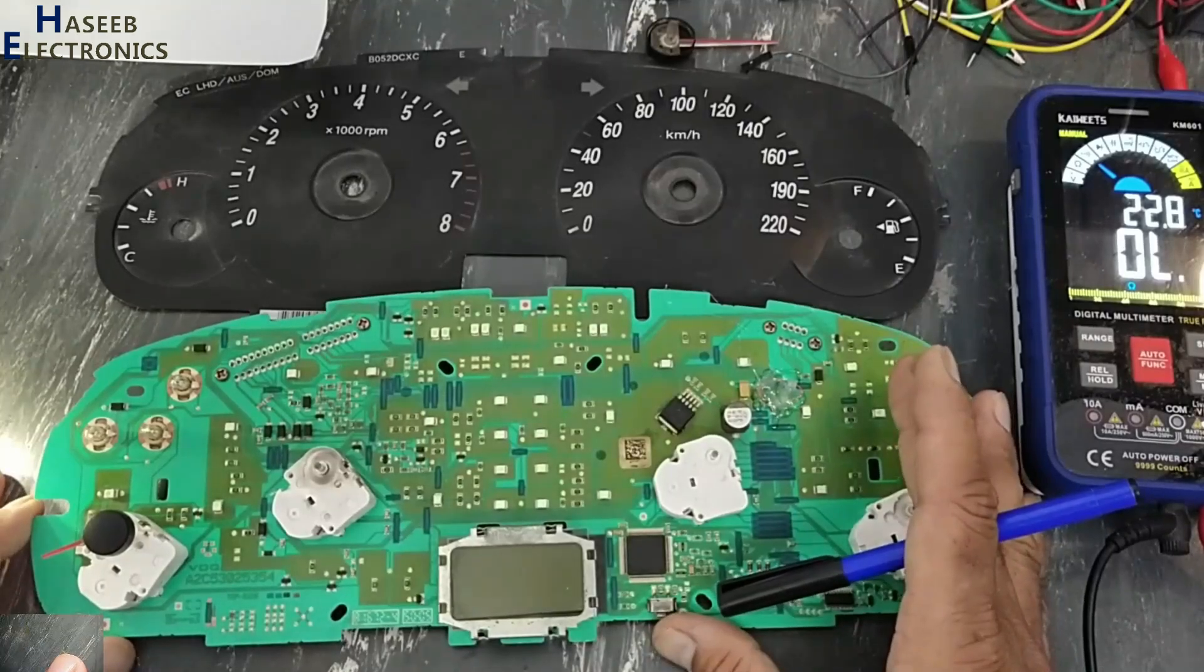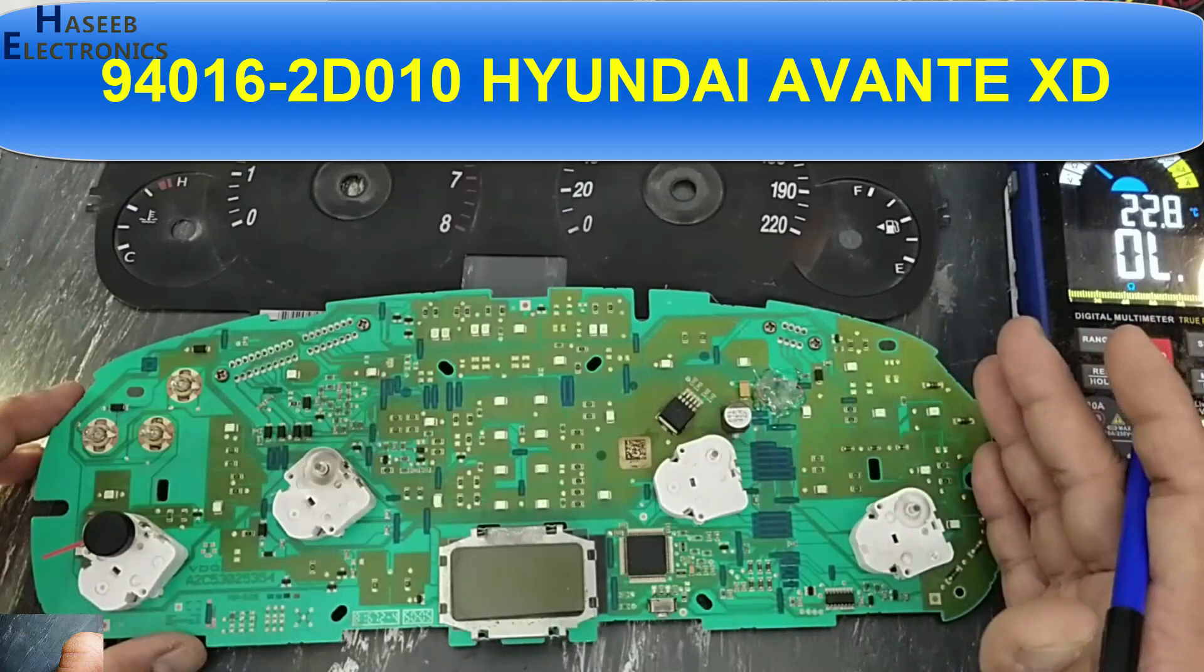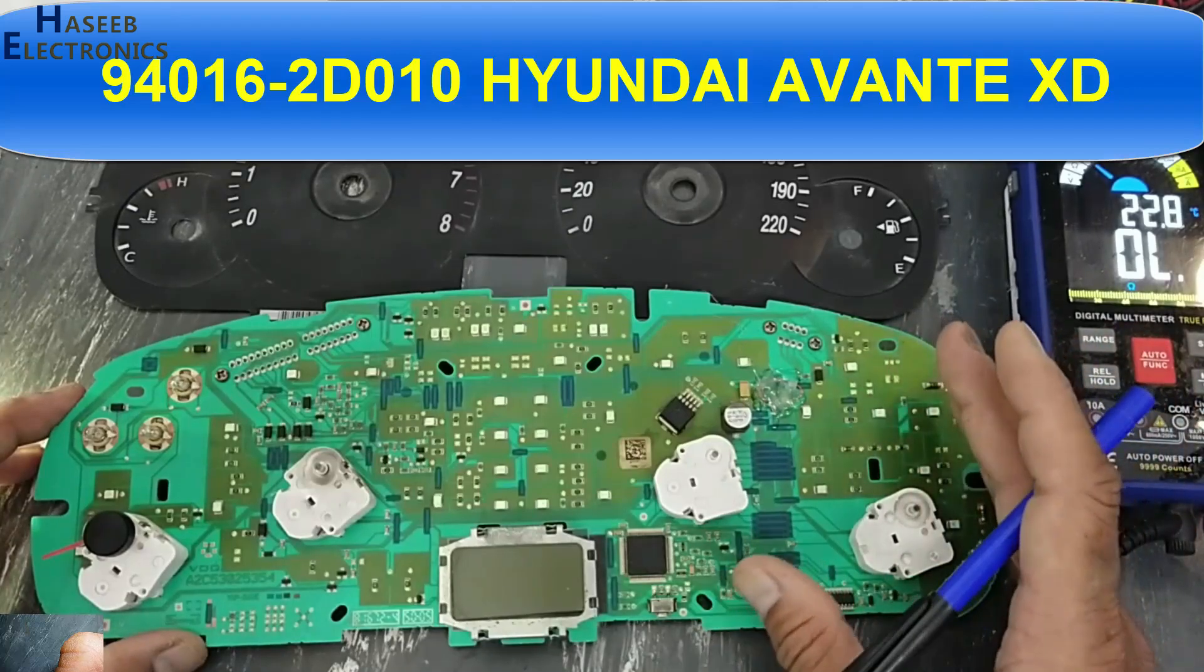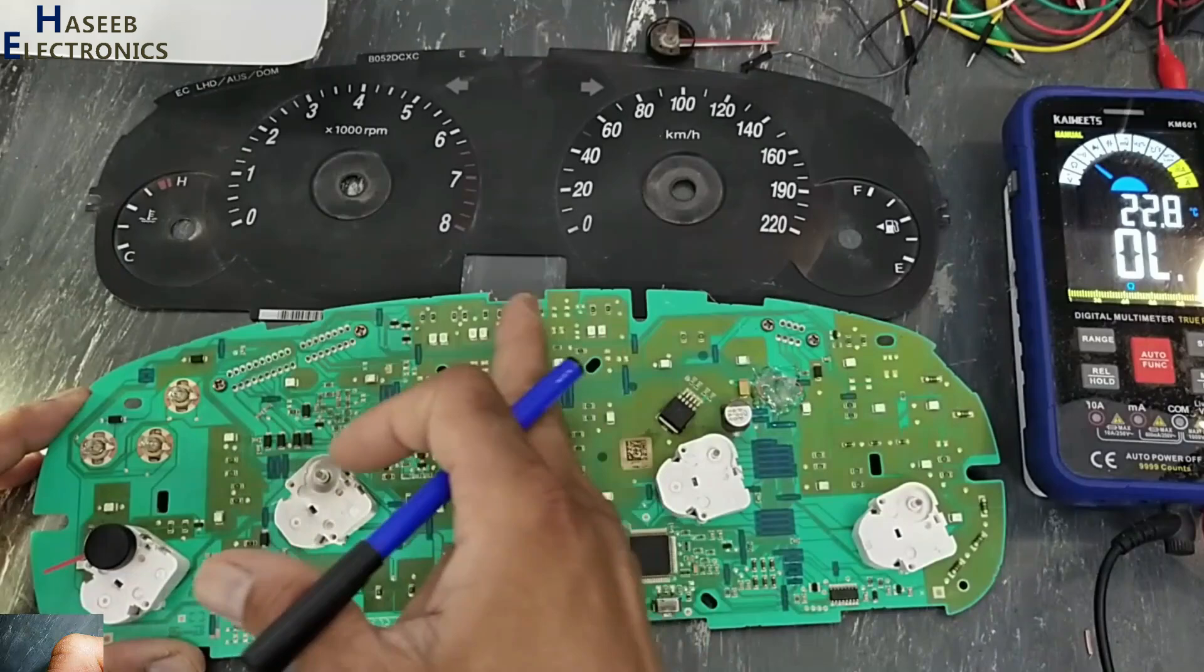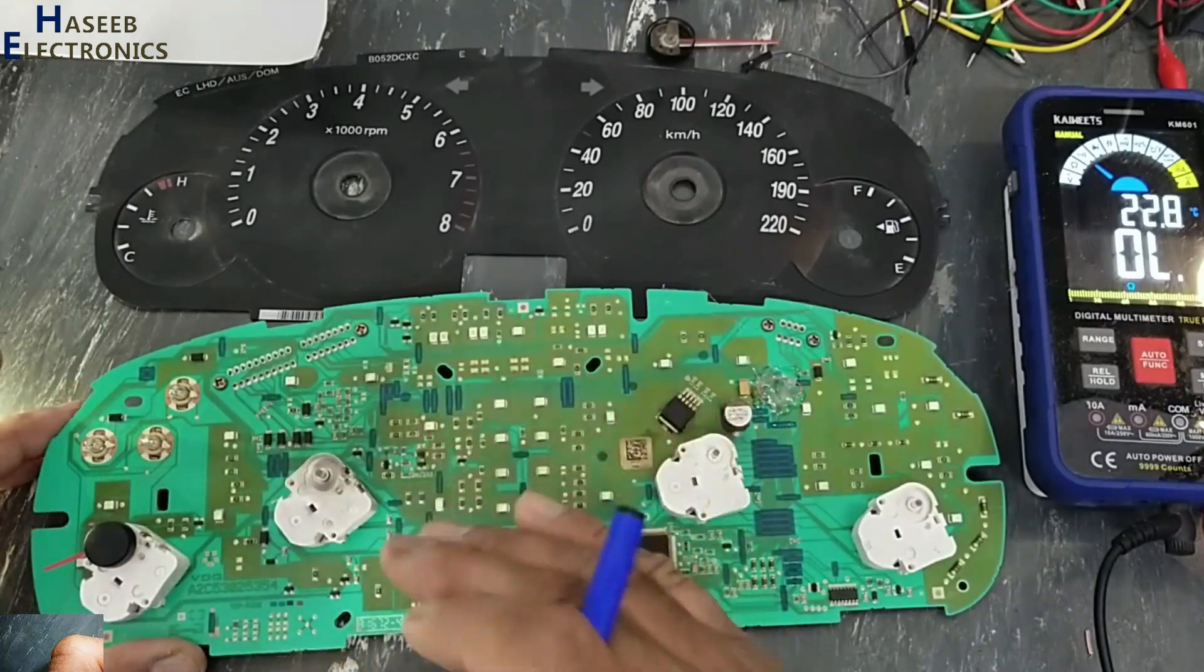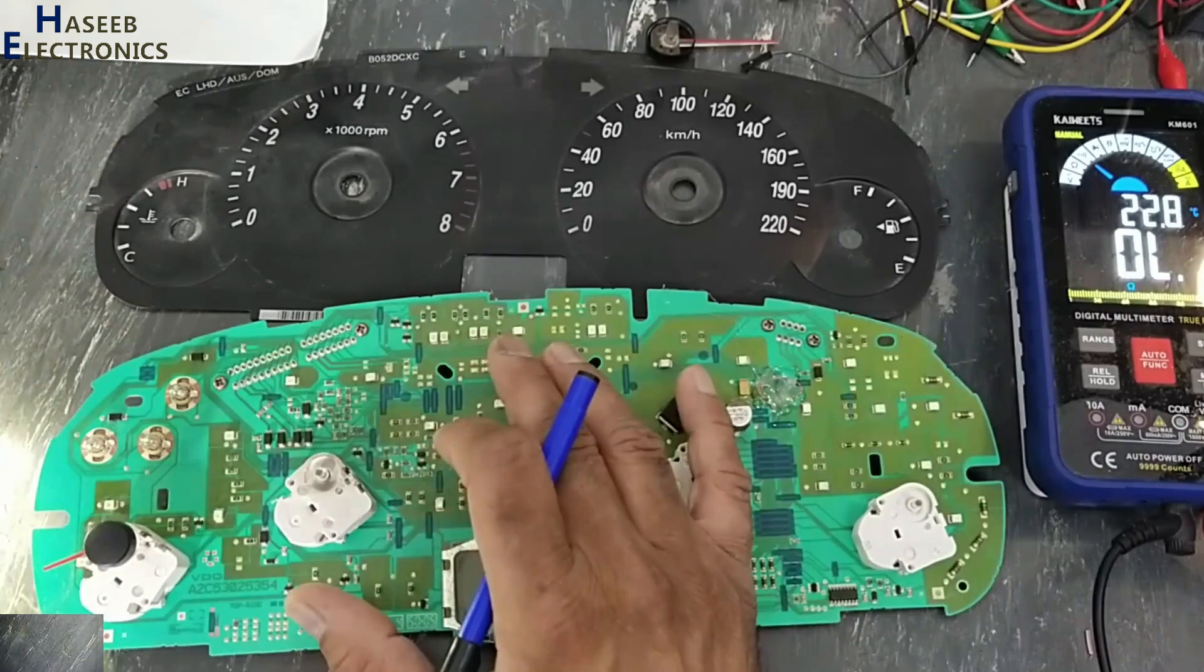Assalamualaikum warahmatullahi wabarakatuhu, friends, welcome back to my channel. This is an instrument cluster for Hyundai Elantra. Its problem is these gauges. I will verify the turn light indicator circuit. How will we trace? Because I don't have any circuit diagram, so I want to verify.